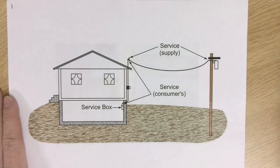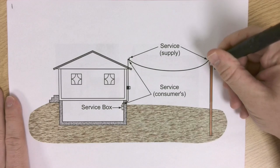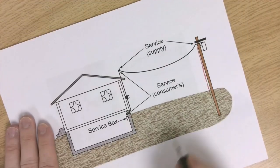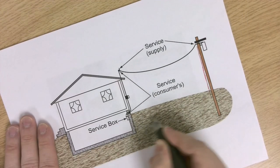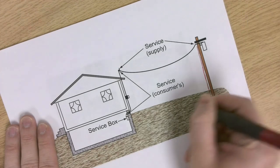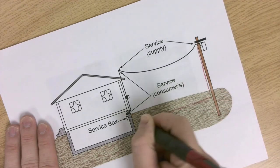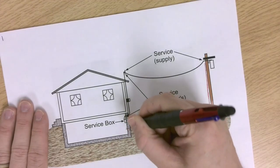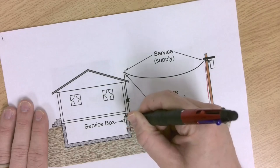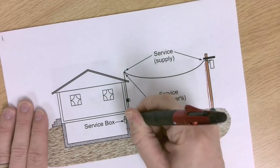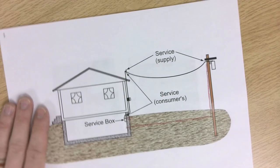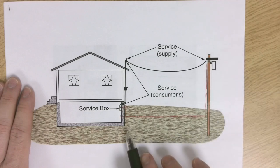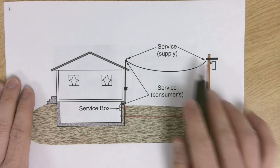The other type of service we're going to talk about would be an underground service. Same idea — we're going to go from that transformer, probably to a meter outside, and then that meter goes to the service box. Those are the two ways we get the service to the building: either overhead or underground.